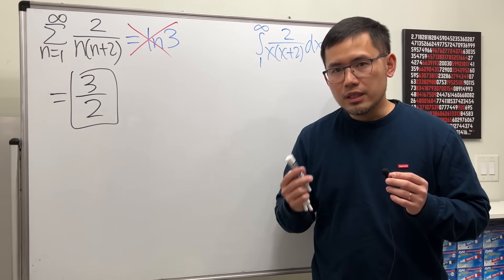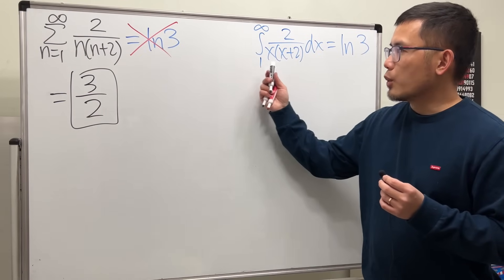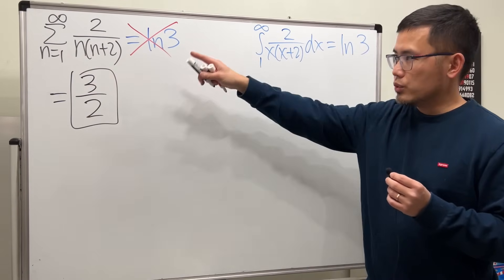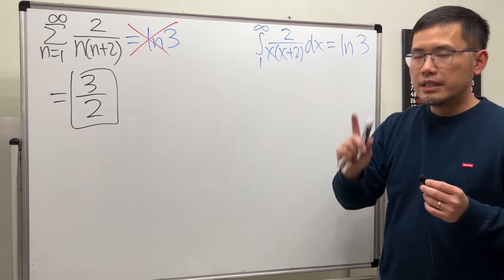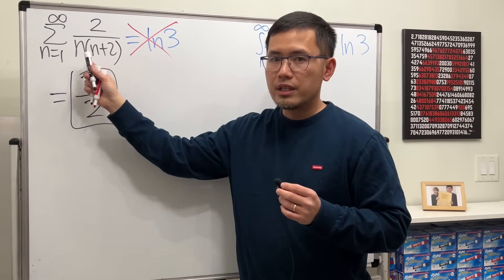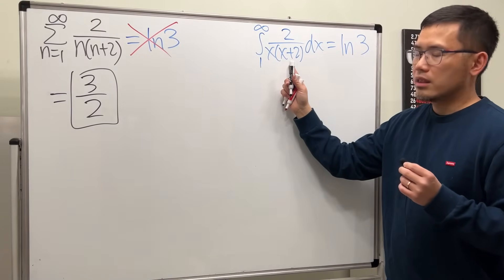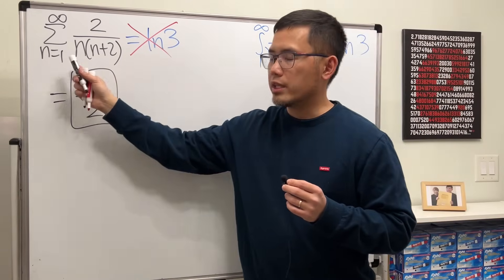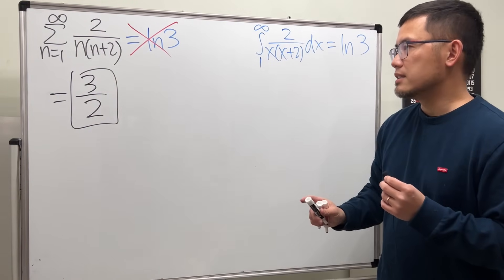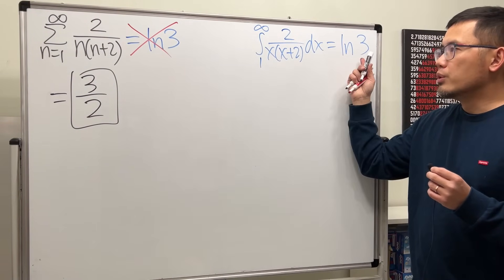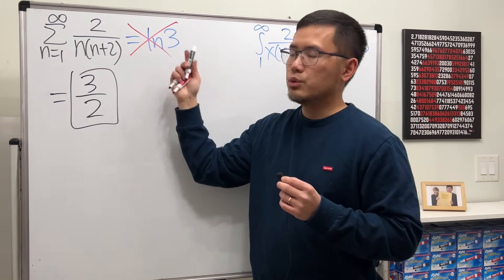So here is what we have to be careful about. When we use the integral test, what we can say is: if the corresponding improper integral to the infinite series converges, then we can say the series also converges. Likewise, if the integral diverges, then the series also diverges. One thing we cannot say is that if the integral equals ln3, the series also equals ln3.